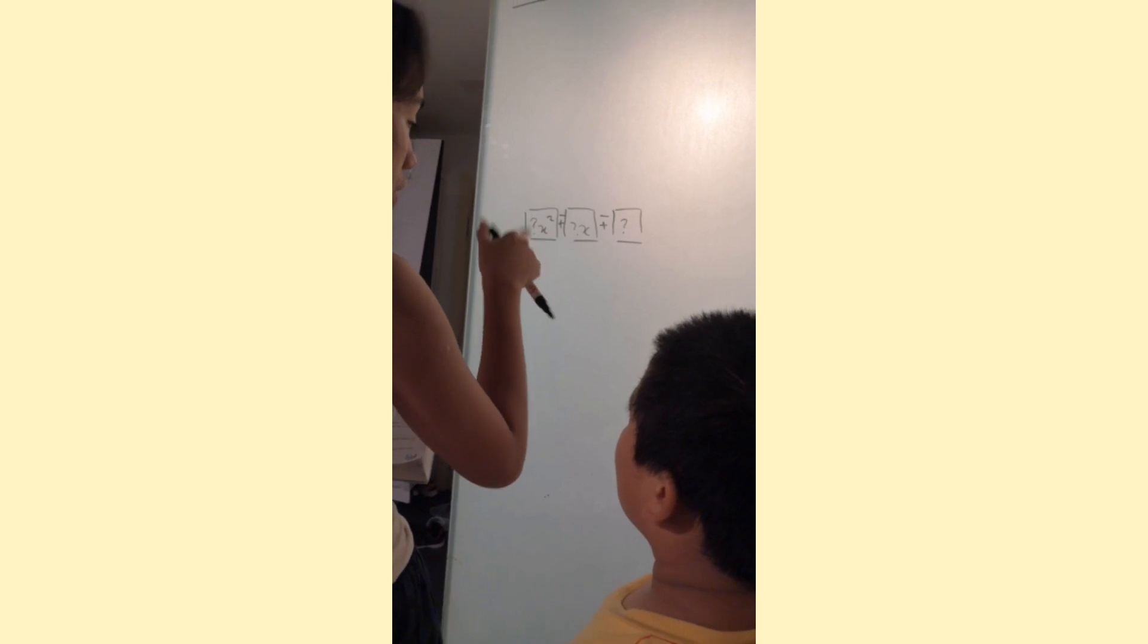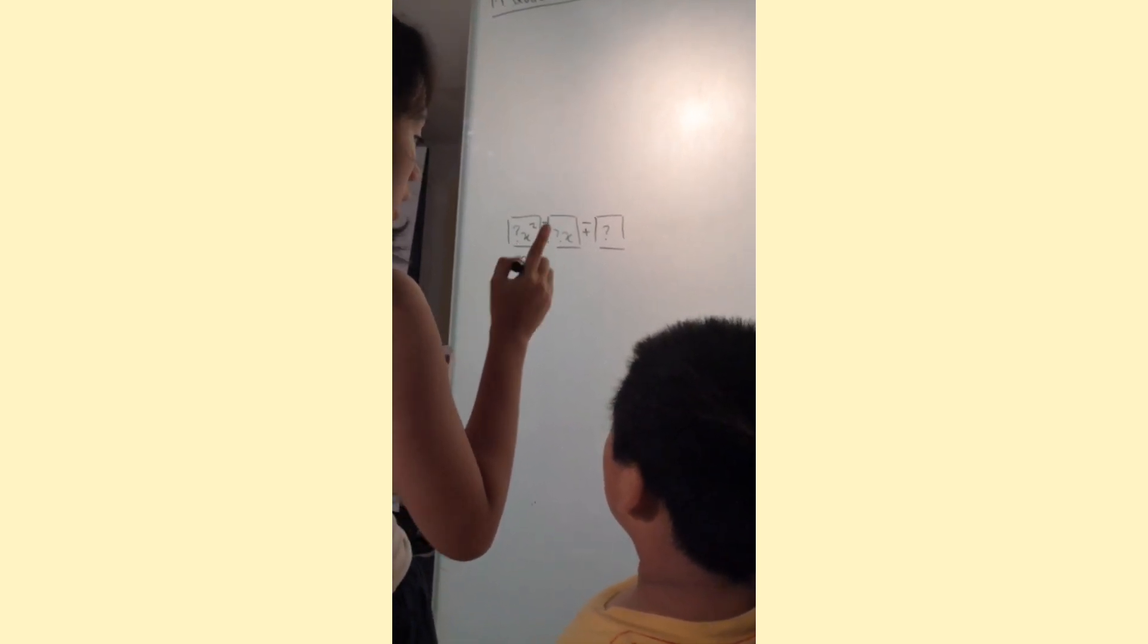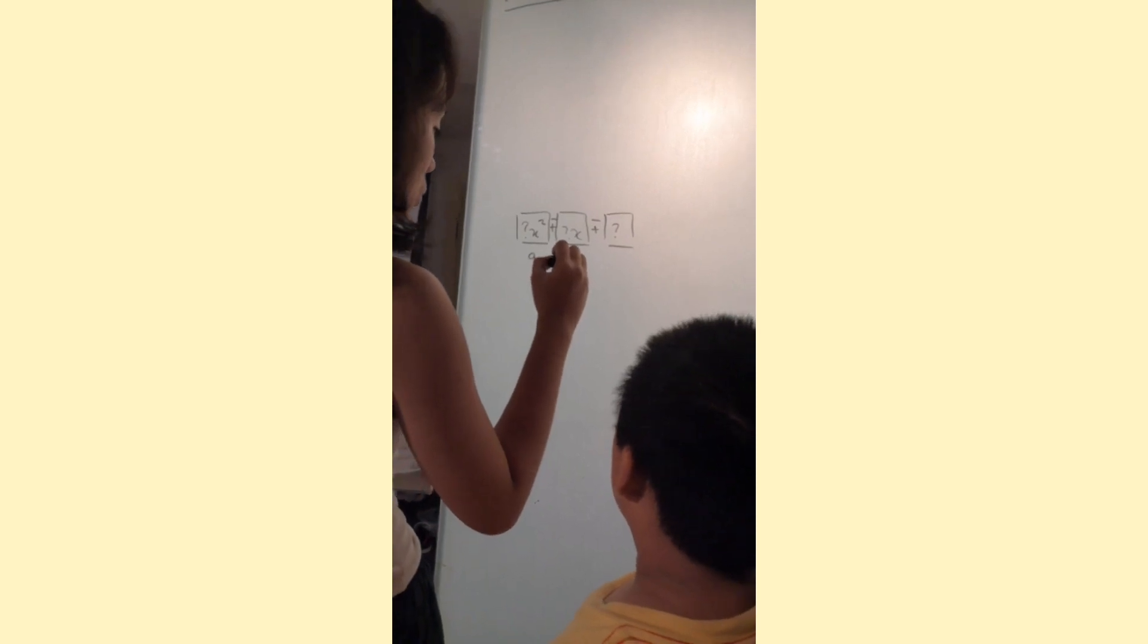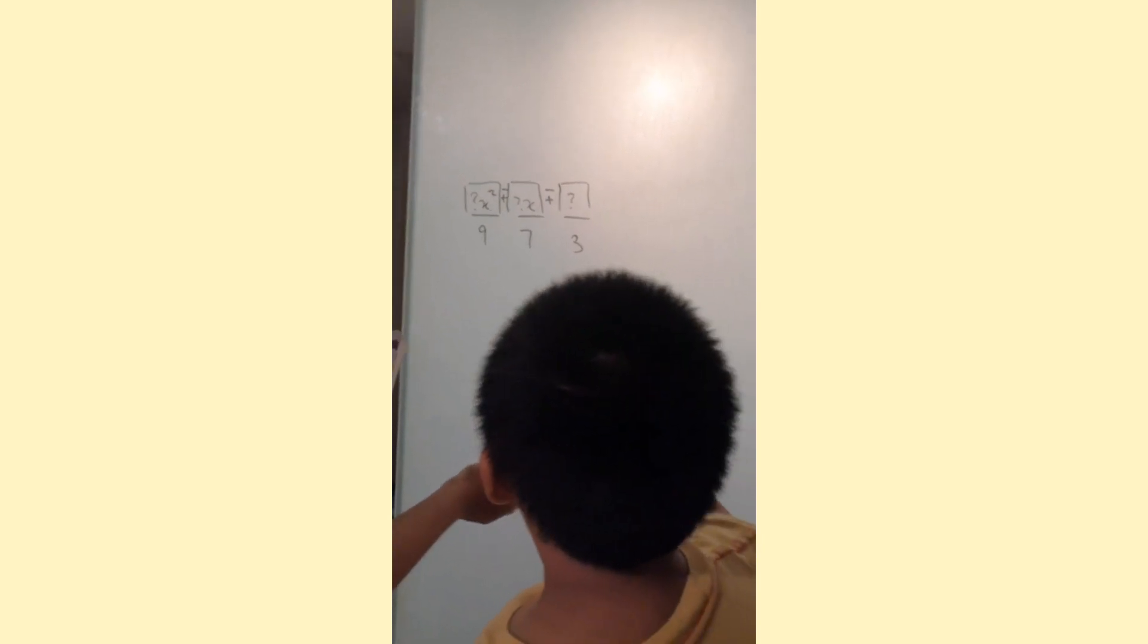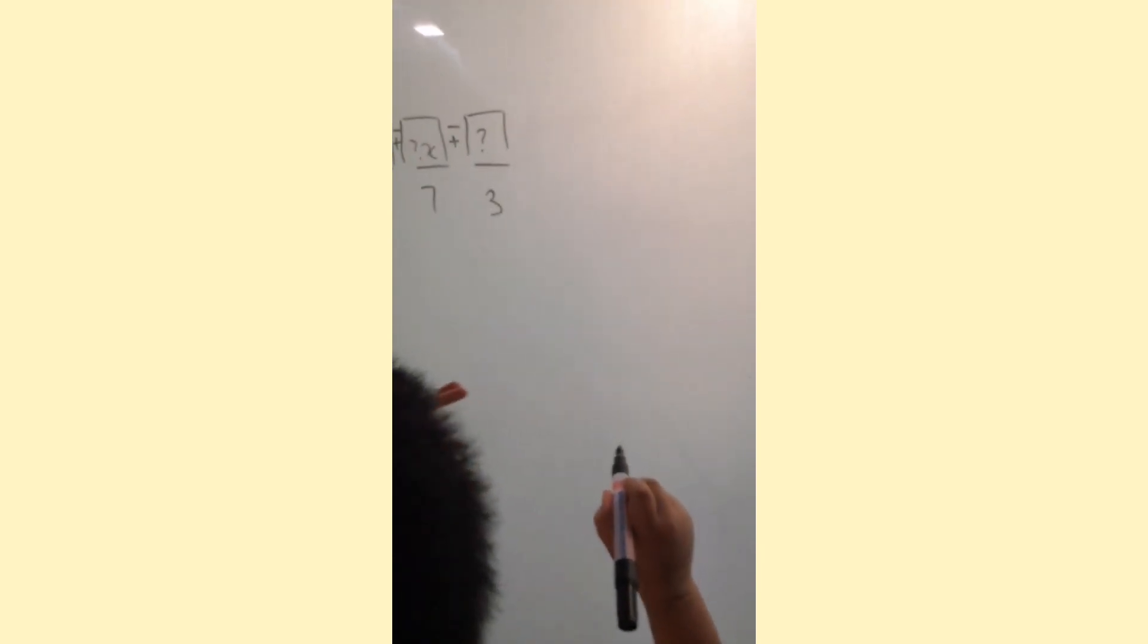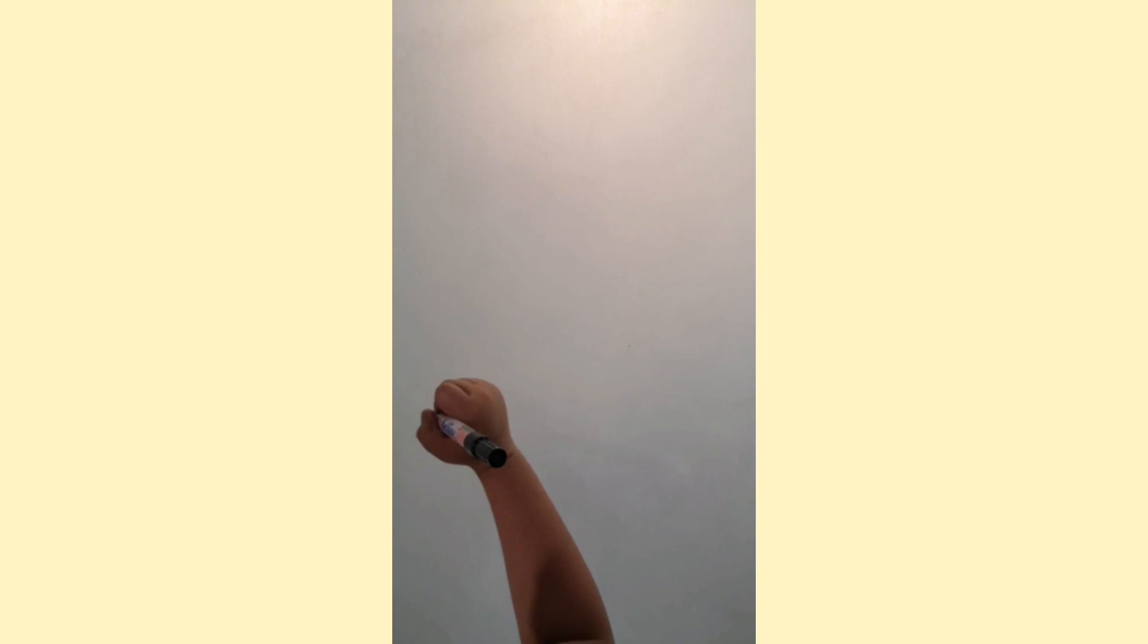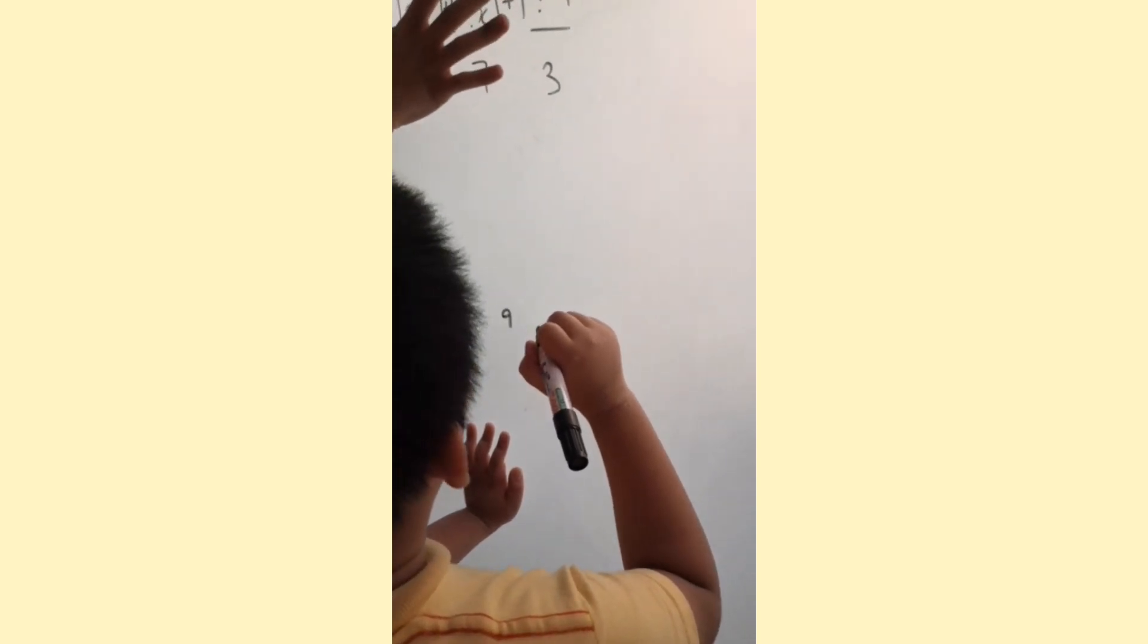The first number I want you to have is nine. Second number, second box, I want you to put seven. And third box, I want you to put three. Make your own expression. No need to put that. Just remember by heart. Three boxes. So, three lines. What's the first rule? What's the first rule? It needs to have a number. And what number did I mention? Nine, right?